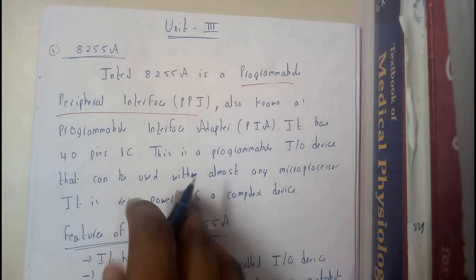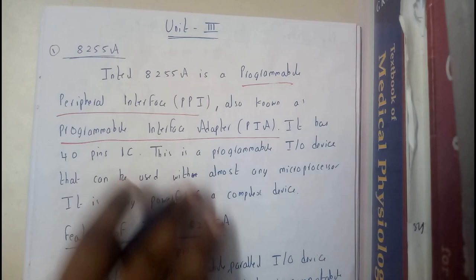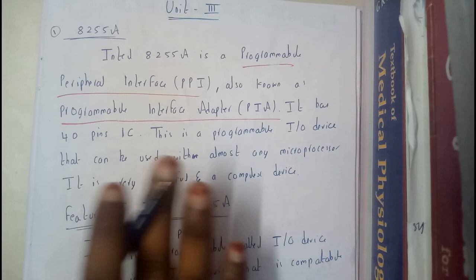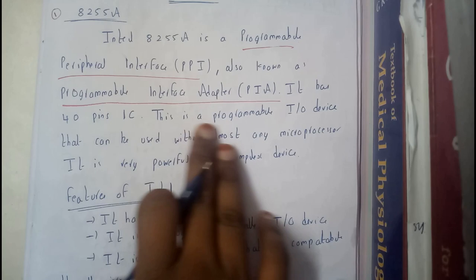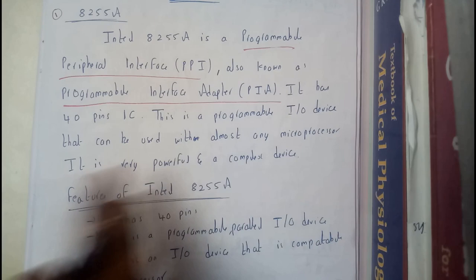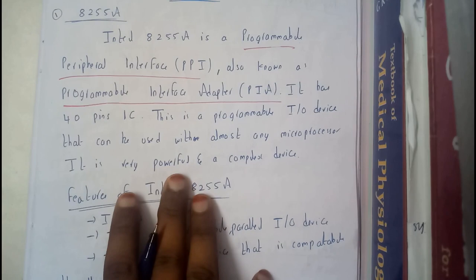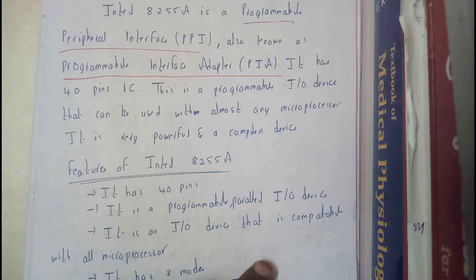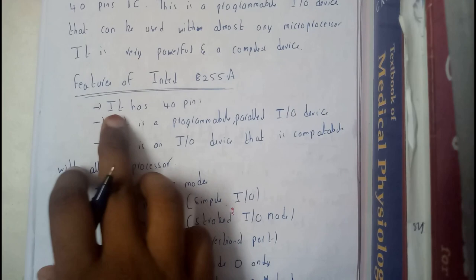Intel 8255A is a programmable peripheral interface, that is nothing but PPI, also known as programmable interface adapter, that is nothing but PIA. It is a 40 pin IC. This pin diagram is really easy. I will be just saying it so that you can even remember it really easily. This is a programmable input output device that can be used with almost any microprocessor. You can connect this device to any microprocessor as per your need. It is very powerful and a complex design. This is the small drawback of this, it is a bit complex.